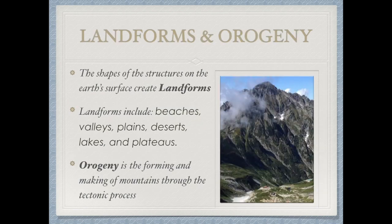There are different shapes of structures that are formed, and these are called landforms. A mountain is a landform; a valley is a landform; a trench goes in — these are all different shapes that are created. Many different landforms could include valleys, mountains, deserts, plains, plateaus, lakes, and beaches.